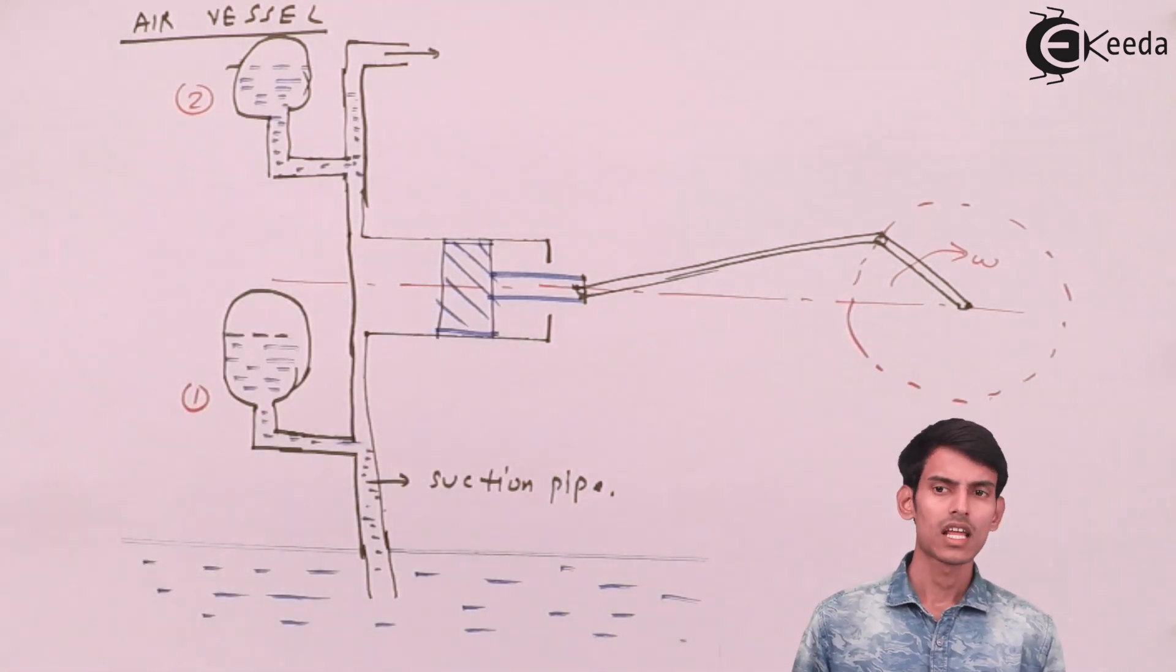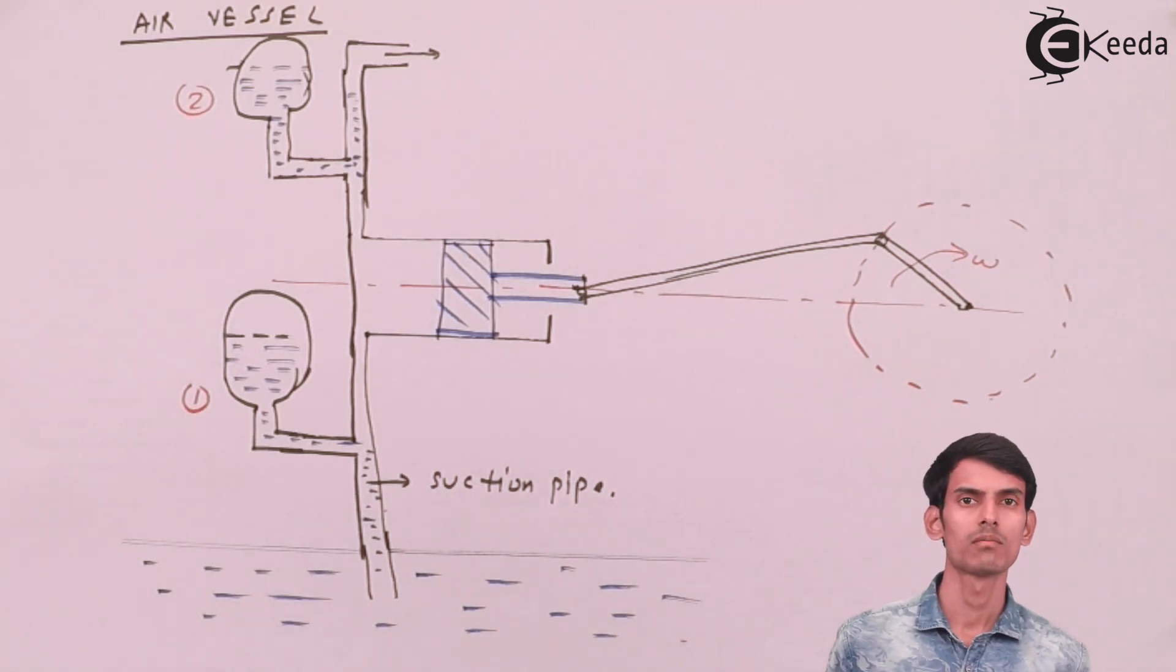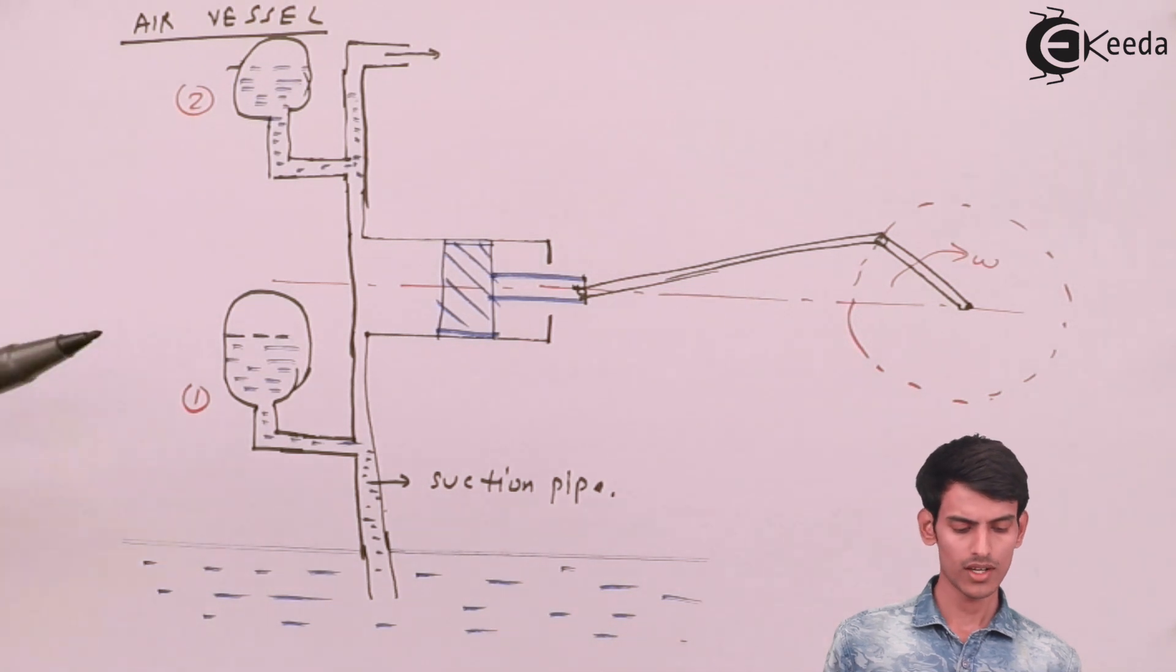Now as you can see in the diagram, I've drawn a reciprocating pump. Initially when I had drawn the reciprocating pump, there was no air vessel in it. Now you can see there are two air vessels.